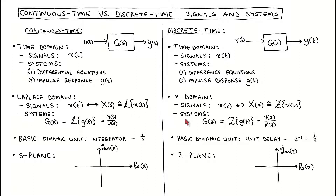Discrete time systems are described in the z domain as transfer functions. The transfer function is defined in two equivalent ways: it is the z transform of the impulse response of the system, and it is also the z transform of an output signal divided by the z transform of the corresponding input signal. Continuous time systems are described in the Laplace domain by transfer functions, which are analogously defined as the Laplace transform of the impulse response and the Laplace transform of an output signal divided by the Laplace transform of the corresponding input signal.